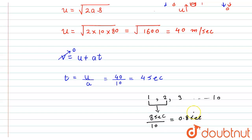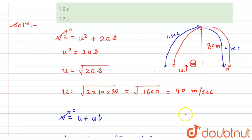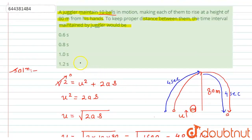So with this 0.8 second time interval between two balls, if the juggler throws the balls, he can maintain proper juggling. According to the given options, option second, that is 0.8 seconds, will be the correct answer for this question.